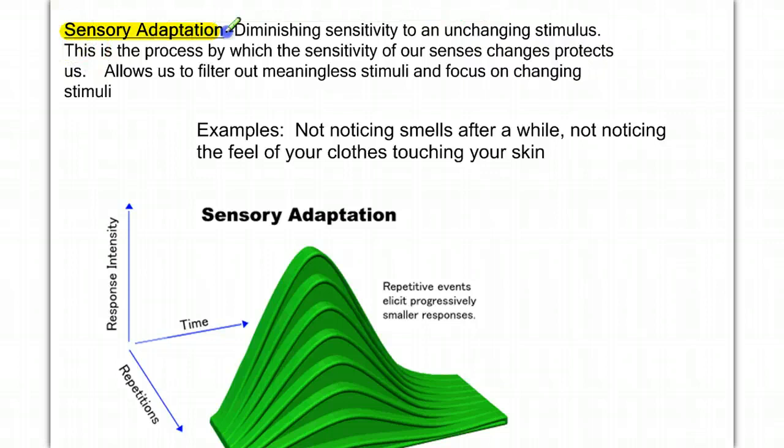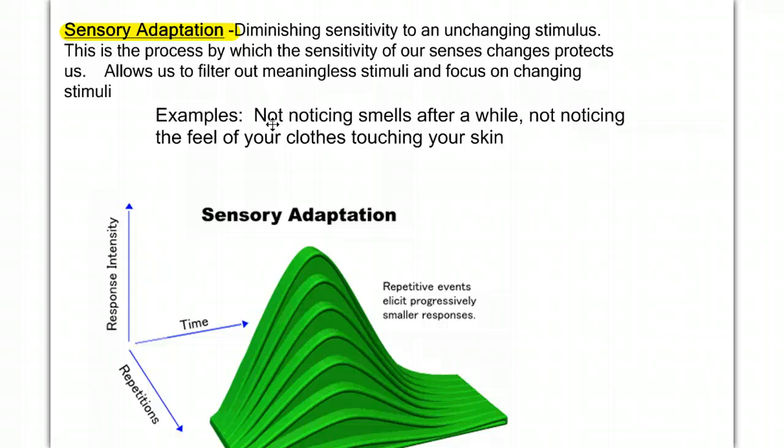Our next concept is sensory adaptation. The diminishing sensitivity to an unchanging stimulus. This is a process by which the sensitivity of our senses protects us. It allows us to filter out meaningless stimulus and focus on what is changing. A couple of examples. When you walk into a room and you notice a strong smell, but after a while you stop noticing it. Or when you first put on your clothes, you feel your clothes touching your skin. But as you go throughout the day, you don't notice that that stimulus is still there. It's not that your clothes are no longer touching your skin. It's just that you're not responding to that stimulus.